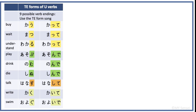Here is a quick review on te forms of verbs. There are 9 possible verb endings for u-verbs. If a verb ends in u, tsu, or ru, its te form is the small tsu and te. If a verb ends in bu, mu, or nu, its te form is nde. If a verb ends in su, it becomes shite; ku becomes ite; and gu becomes ide.